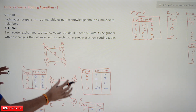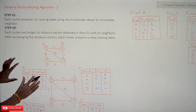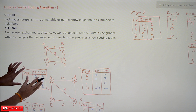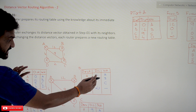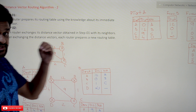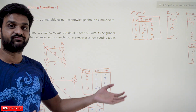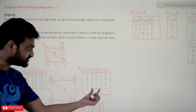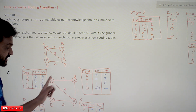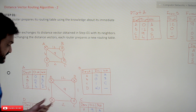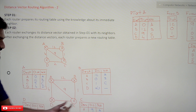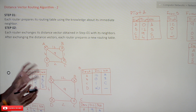For example, we'll discuss Router A and the table generated by Router A. The exchange of distance vectors with neighbors is done at each router: A's distance vector will be exchanged with B, D, and C; B's distance vector will be exchanged with A and C; D's distance vector will be exchanged with C and A; and C's distance vector will be exchanged with D, A, and B.